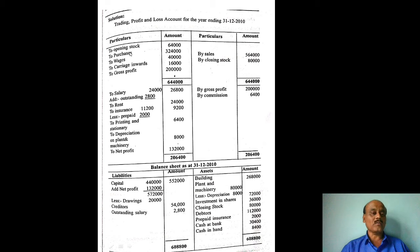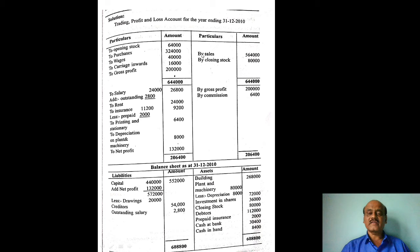The trading account debit side starts with opening stock, then purchases — less purchase returns — net purchases Rs. 3,24,000. Then wages Rs. 40,000 and carriage inwards Rs. 16,000. Total debit side of trading account: Rs. 6,44,000.